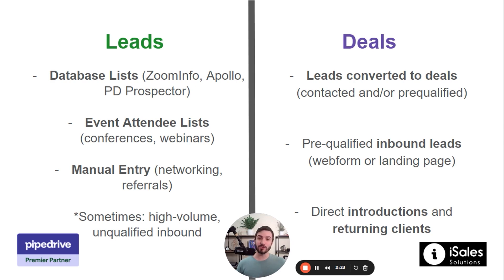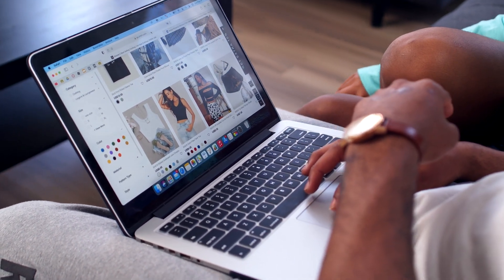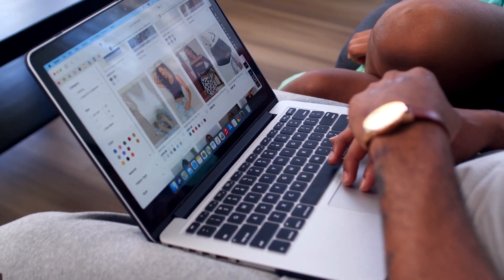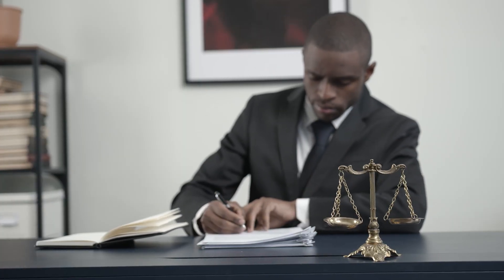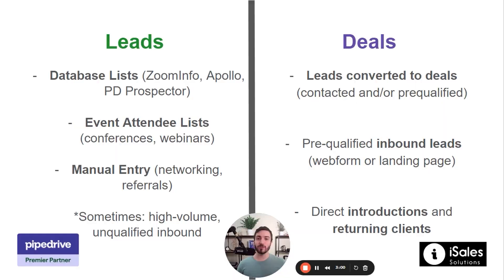Why would you include inbound leads as deals right away? Typically, you would include them because if it's an inbound lead, they are aware of who you are and they've shown some type of interest. But there are some companies that get a huge volume of inbound leads that are not yet well qualified — maybe they get 10 inbound leads but only two of them really qualify for the products or services. In that case, where there has to be a heavy amount of qualification upfront, we typically push those inbound opportunities into leads first until they're qualified. But if you get a standard handful of leads per day and they are usually pretty qualified, we just bring them straight into the deals inbox.